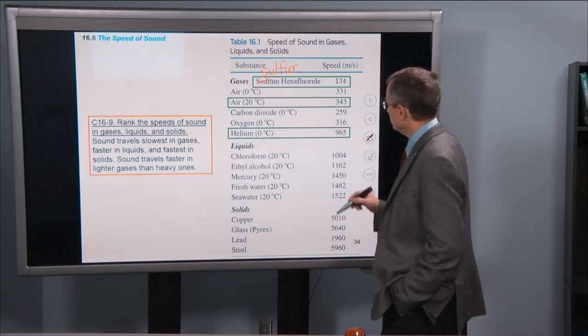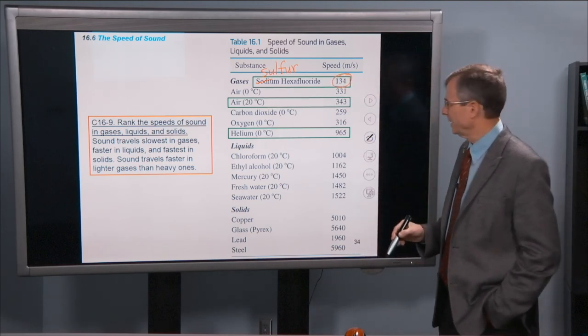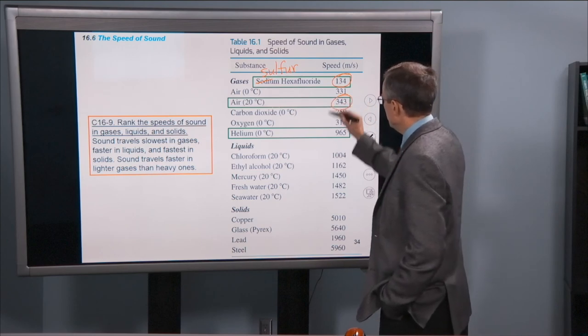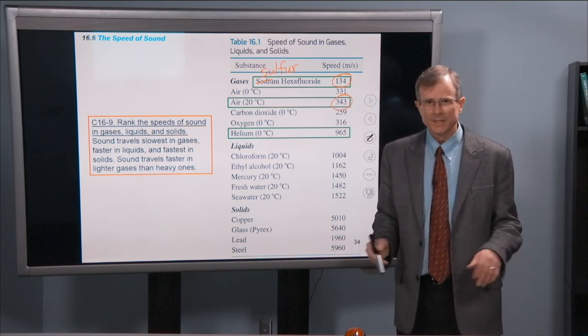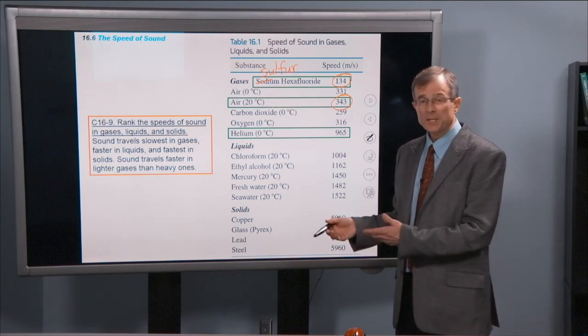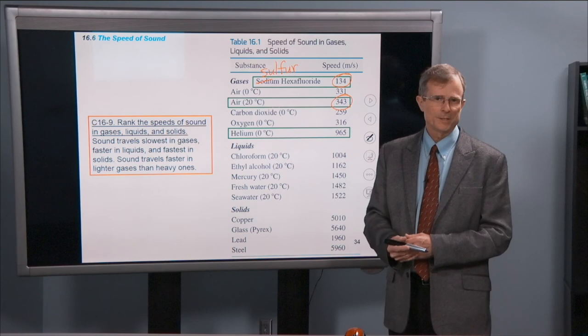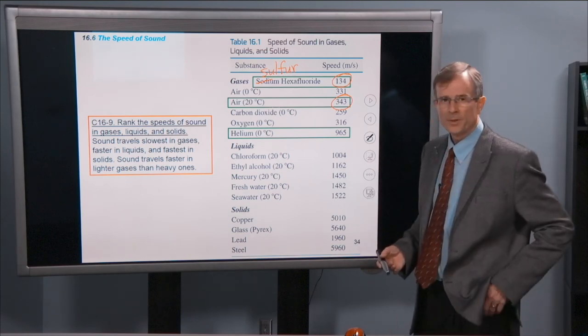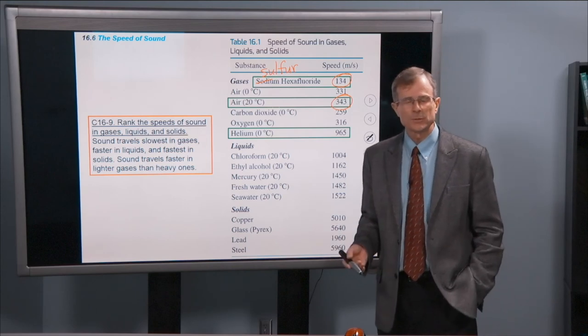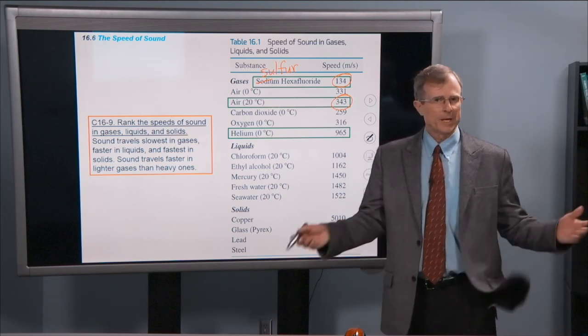Sulfur hexafluoride has a sound speed of 134 meters per second. Air is 343 meters per second. You'll get tired of that number after you've done a lot of homework problems. I'm not expecting you to know that number. That's kind of a nice number to be able to trot out at parties and impress your friends with. It's about a thousand feet per second, given the fact that a meter is about three feet.